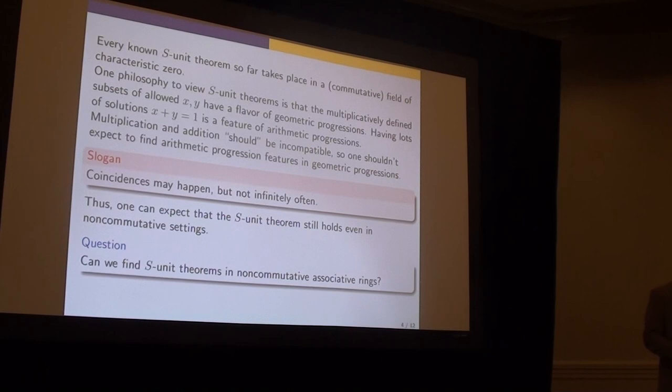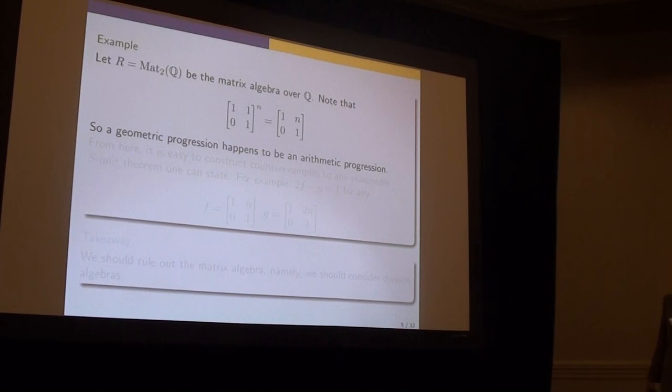But you can still expect that S-unit theorem still holds even in non-commutative settings. Right, the multiplication becomes more complicated, but the geometric progression still has this nature of something discrete but not so homogeneous as a lattice. You still don't quite expect to find arithmetic progressions inside there. And the question here is: can we actually find S-unit theorems in any non-commutative associative rings?